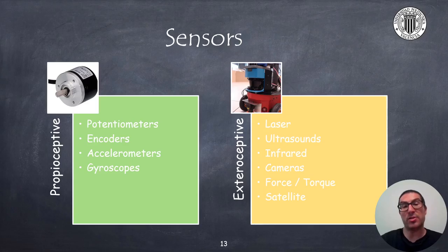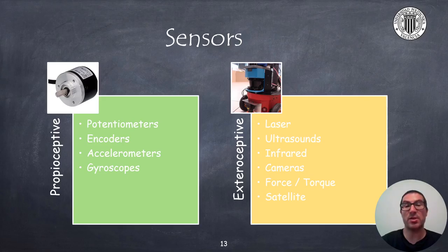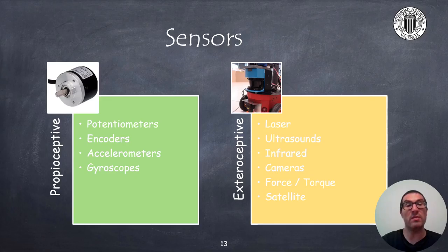Finally, sensors are a fundamental part of a robot because they provide essential information to interact with the environment. They can be classified based on the nature of the variable they measure. If they measure internal variables, these sensors are known as proprioceptive sensors, which is the case of potentiometers, encoders, accelerometers, and gyroscopes, among others. Sensors used to measure external variables are known as exteroceptive sensors. There is a huge variety of sensors using different measuring principles and technologies, such as lasers, ultrasounds, infrared sensors, cameras, force and torque sensors, and satellite-based location systems, etc.